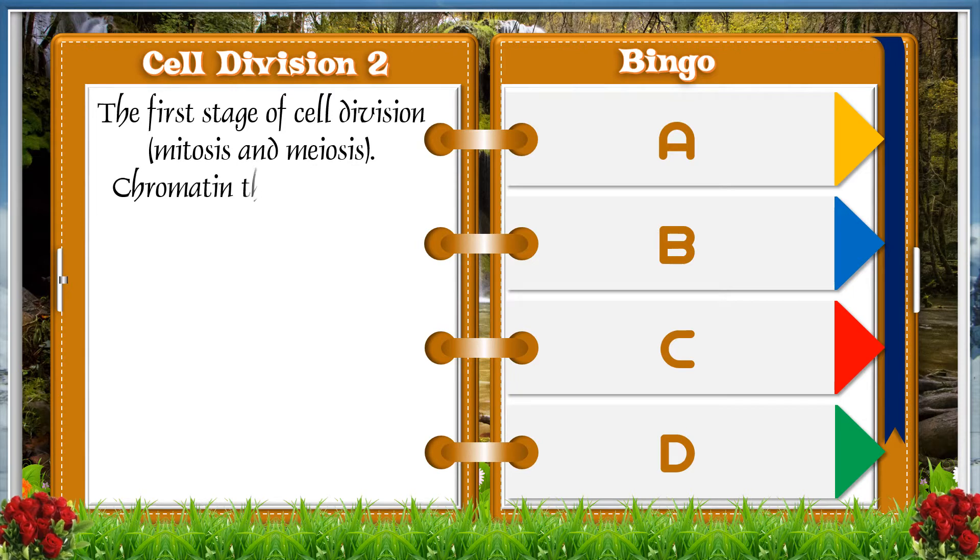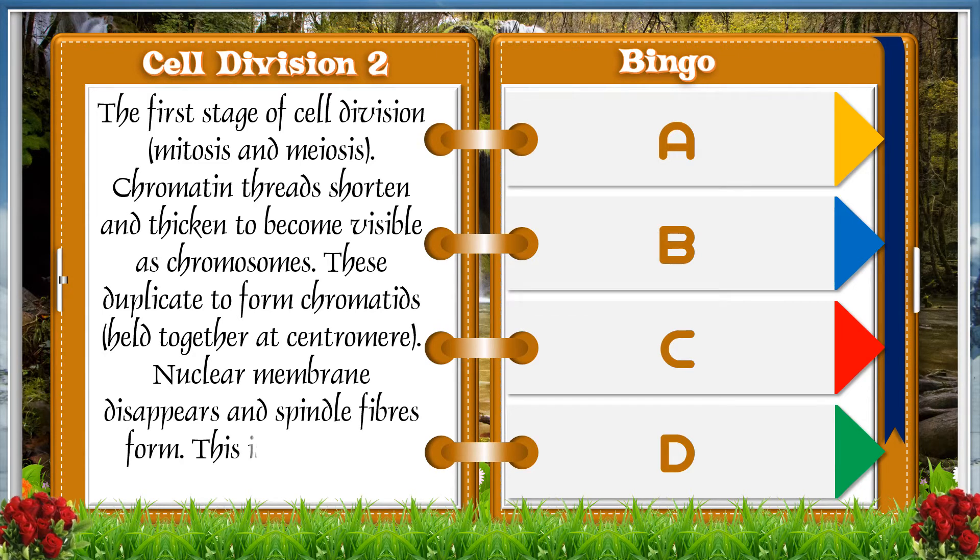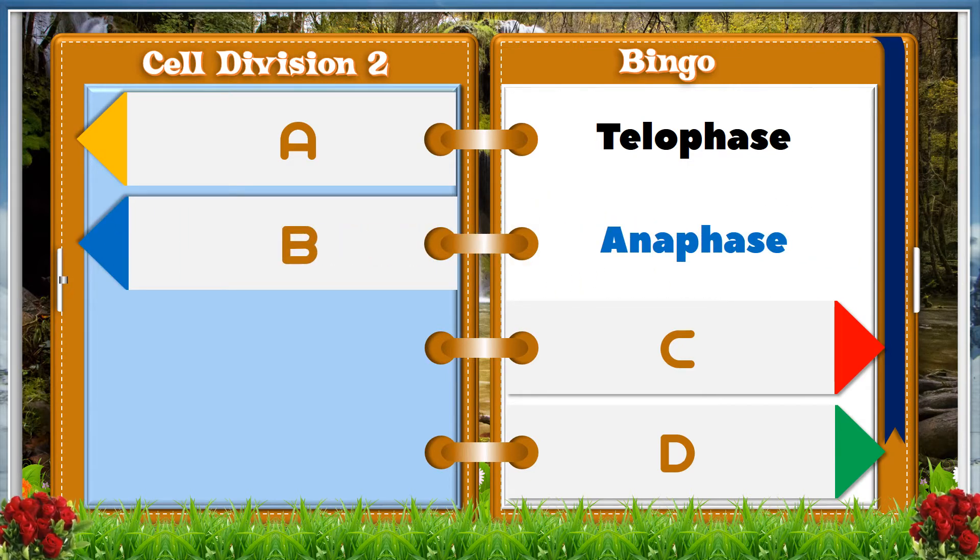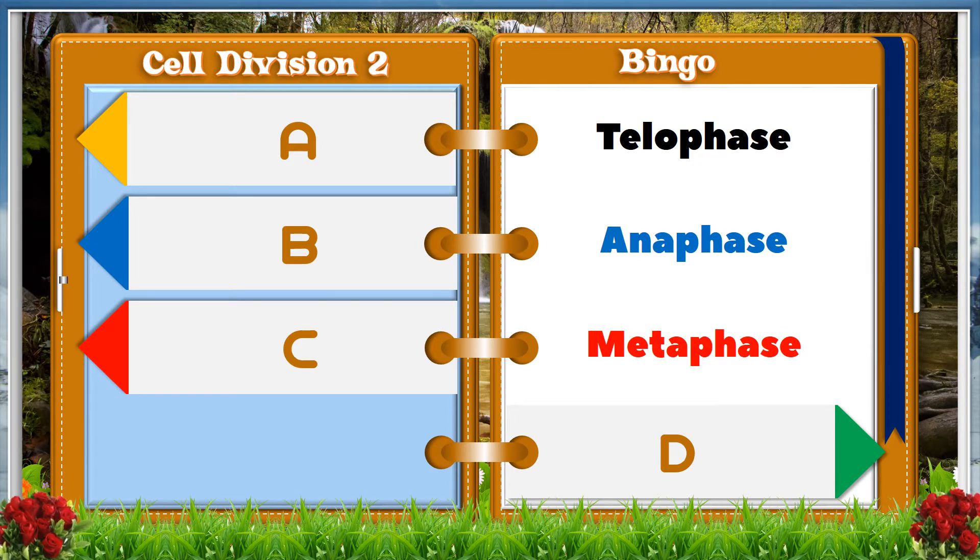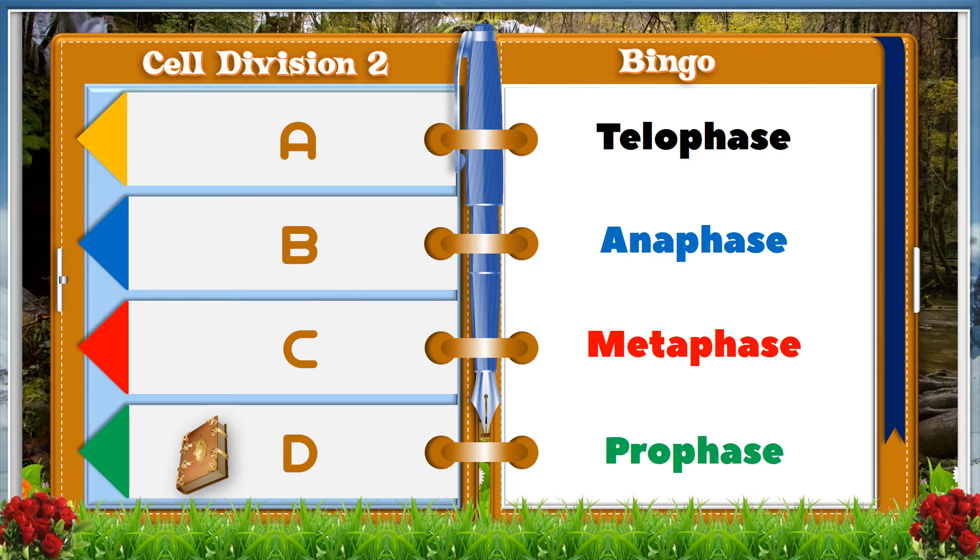The first stage of cell division, that is in mitosis and meiosis. Chromatin thread is shortened and thickened to become visible as chromosomes. These duplicate to form chromatids, which are held together at the centromere. Nuclear membrane disappears and the spindle fibers form. This is followed by metaphase. A: telophase, B: anaphase, C: metaphase, D: prophase. And the answer is D, prophase.